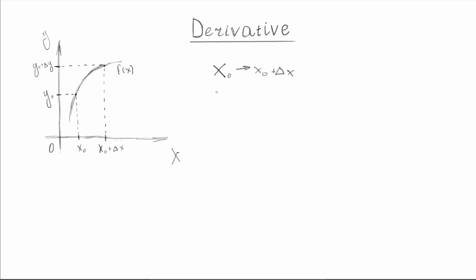So here we changed x0 to x0 plus delta x. And from here, we can say that our delta y value — which is between these two values — will equal f of x0 plus delta x, because this is a function of the value x0 plus delta x, minus our initial value y0, or we can say the same thing: minus f of x0. Let's remember this equation because it will be very important.